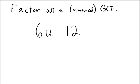So in our first example here, we'll do two examples. We have 6u minus 12. In order to correctly factor out a GCF, the key is to look at the first part of the binomial, the 6u, and the second part of the binomial, which is the 12, and find a number that is common to both of these numbers.